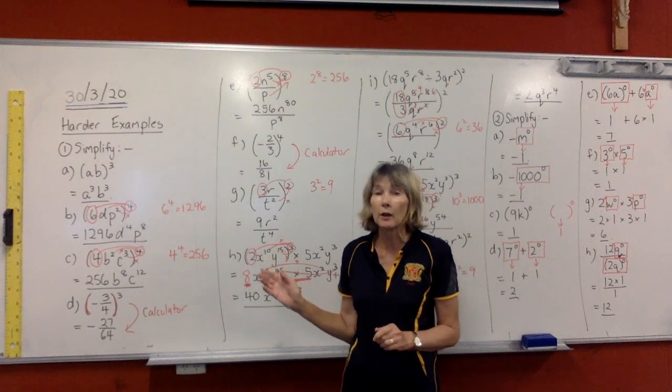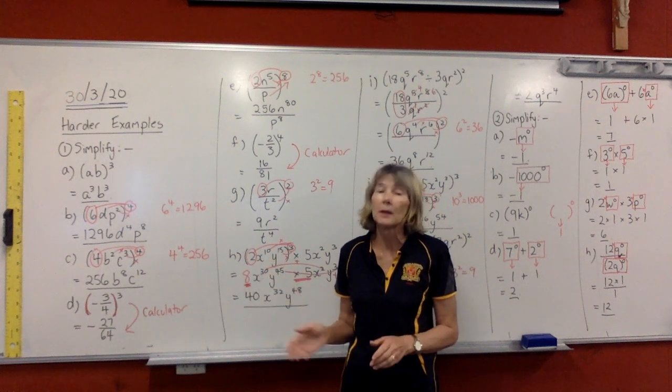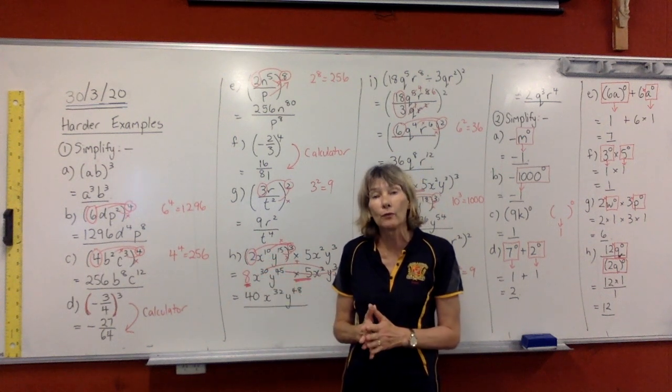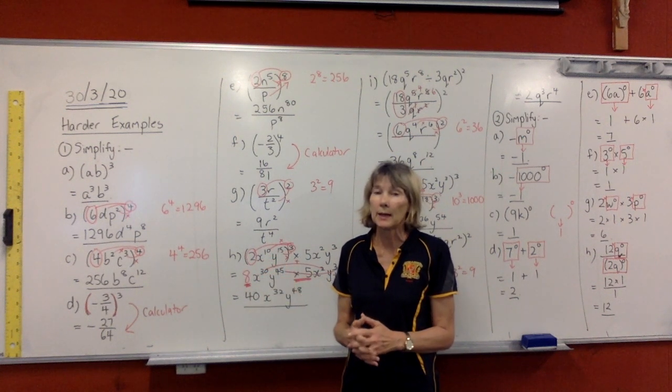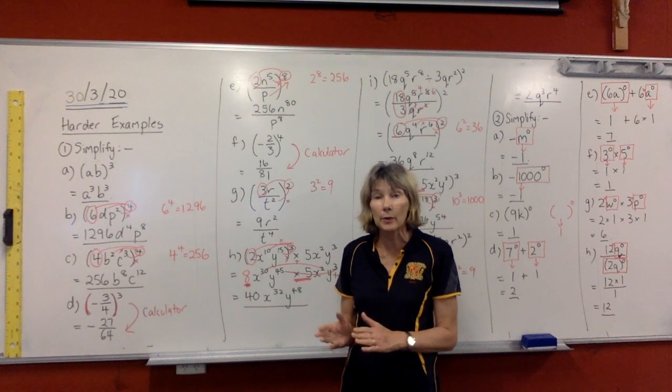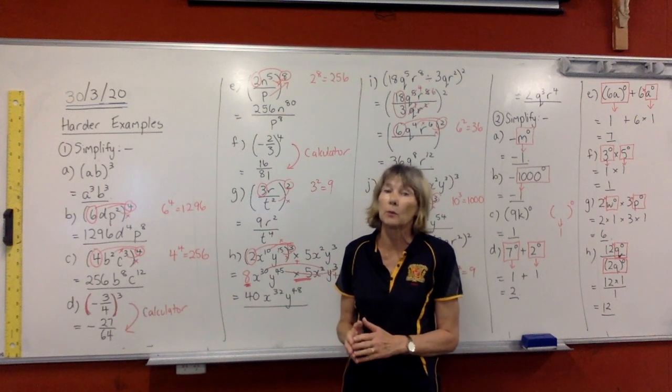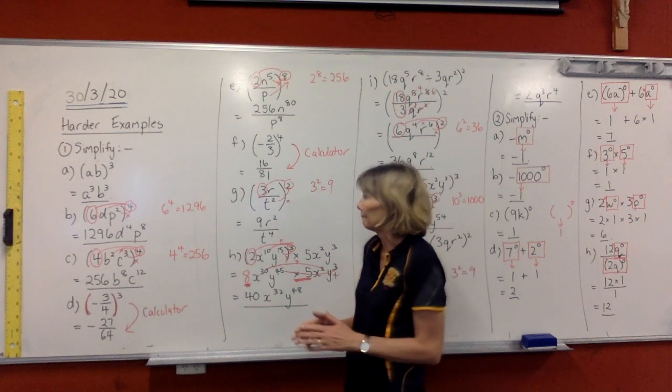We're going to be using that a lot today. And then the fourth one, which we'll also be using today, is if you've got something with a zero index, it will equal 1.